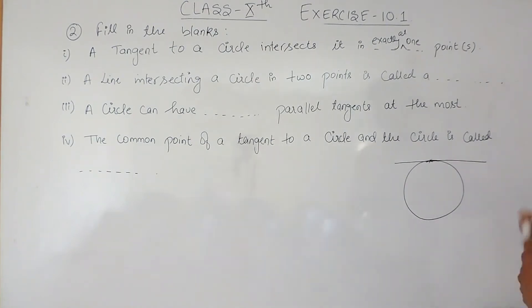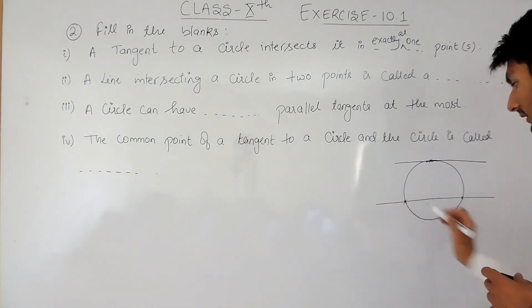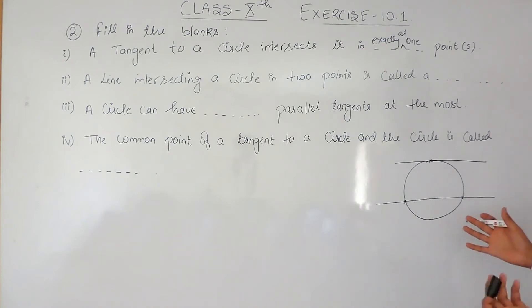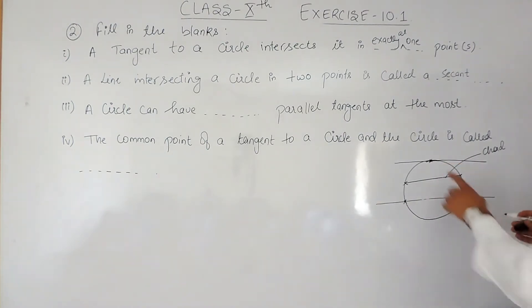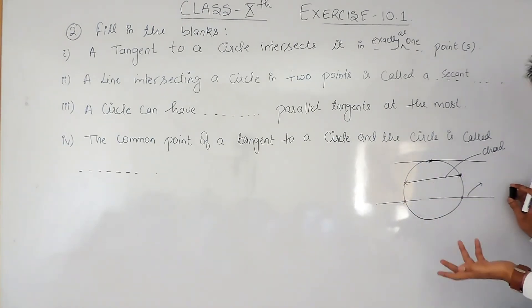Now let's solve the second part: a line intersecting a circle in two points is called a _____. This we also discussed in the previous video. If a line intersects a circle at two points, this is known as a secant. A chord also intersects at two points, but a secant keeps going while a chord ends at those points.